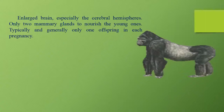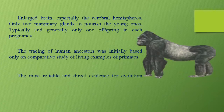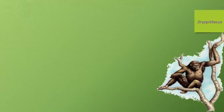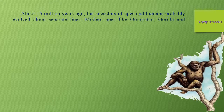The tracing of human ancestors was initially based only on comparative study of living examples of primates. The most reliable and direct evidence for evolution comes from the study of fossils. About 15 million years ago, the ancestors of apes and humans probably evolved along separate lines.